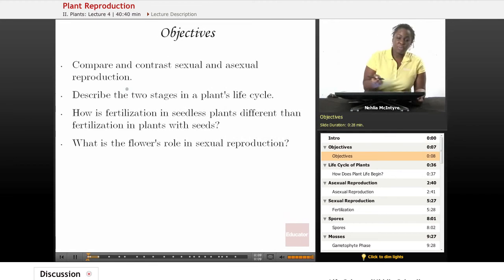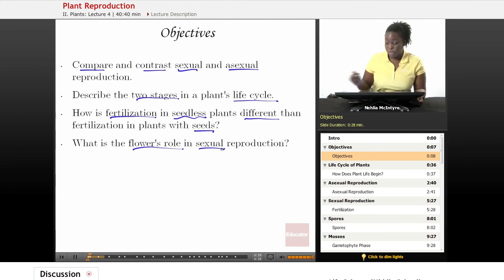The objectives for today's lesson are: compare and contrast sexual and asexual reproduction; describe the two stages in a plant's life cycle; how is fertilization in seedless plants different from fertilization in plants with seeds; and what is the flower's role in sexual reproduction?